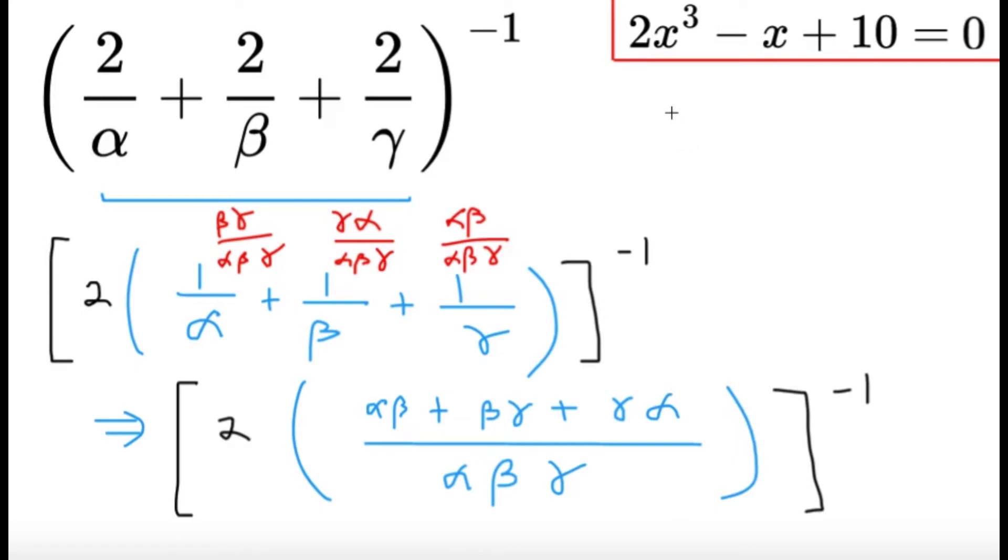Alright, so from the Vieta's relations, we get that alpha beta plus beta gamma plus gamma alpha, that's going to be the sum of the roots taken two at a time. That's going to be equal to negative 1 over 2.